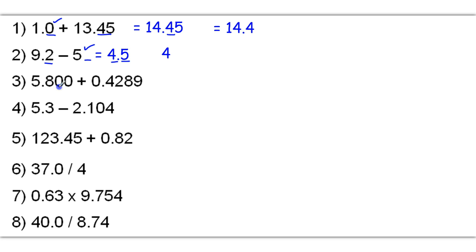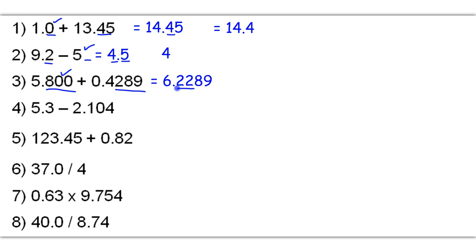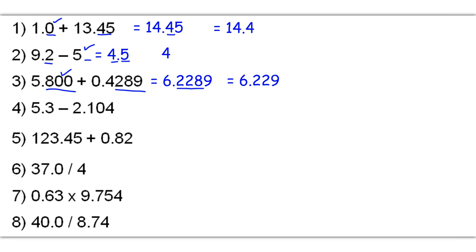5.800 plus 0.4289 gives me a raw answer of 6.2289. Because this number has 3 decimal places and that one has 4, we're going to go with 3 decimal places in our answer. So we're going to round off here, and that 9 is going to round this 8 up to a 9, giving me 6.229 as my final answer.